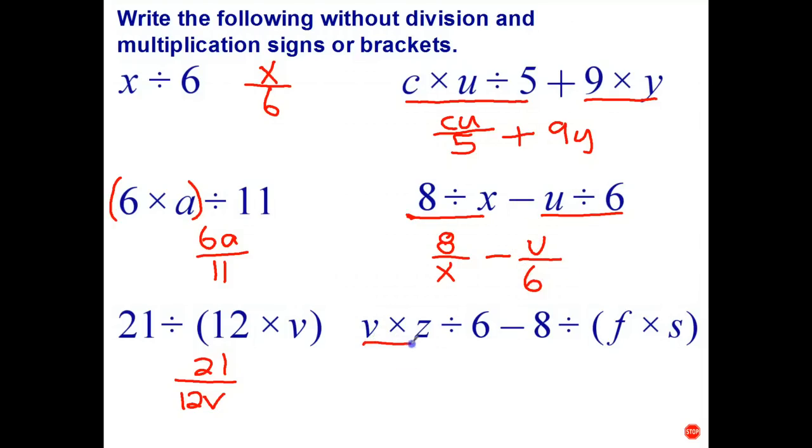And the last one, once again, we have two terms. The first one is v times z is just vz divide 6. And the second term, subtract 8 divide fs.